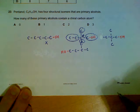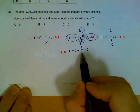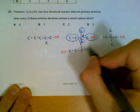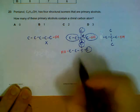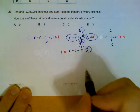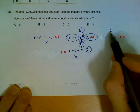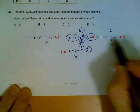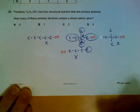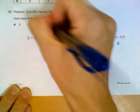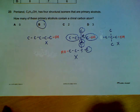For the third structure, there isn't a chiral carbon. The central carbon is joined to CH3 and also CH3, so none of the carbons are joined to four different groups. Finally, in the fourth isomer, there are also no carbons joined to four different groups. So we only have one primary alcohol that contains a chiral carbon.